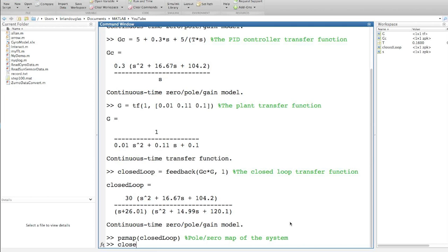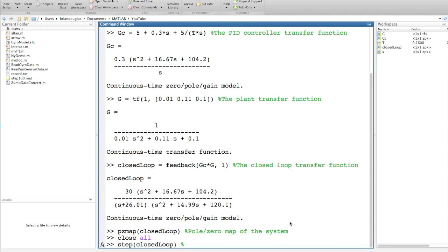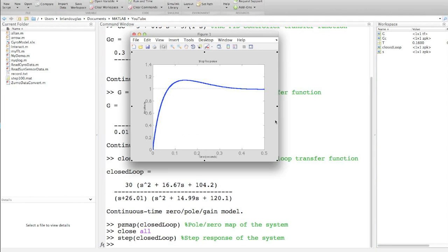Alright, now let's see what the step response looks like for our system. Again, it's pretty close to our expectations. You can see that the system has a slight overshoot, which is characteristic of an underdamped system, and that the steady state value is 1. Which means that if we tell our controller to rotate the shaft at 9 radians per second, the shaft will be rotating pretty close to 9 radians per second after about half a second.